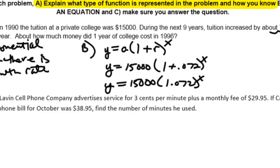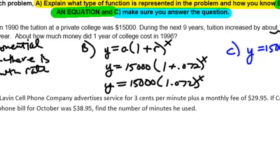Part B was write the equation, and then Part C is to make sure we answer this thing. It says how much did one year of college cost in 1996? Remember that 1990 was year 0, so that means 1996 is going to be year 6. I take my equation and apply my exponent of 6 to find out that in 1996, a year of college tuition costs about $22,700 for one year.